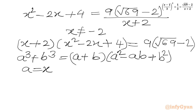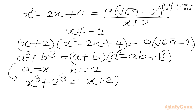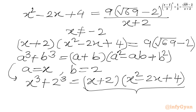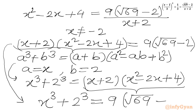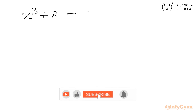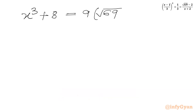Plugging in a equal to x and b equal to 2, we get x³ plus 2³ equal to (x plus 2)(x² minus 2x plus 4), which is exactly our left-hand side. So we can write the equation as x³ plus 2³ equal to 9 times the square root of (69 minus 2).